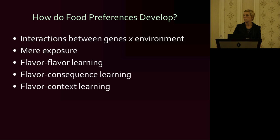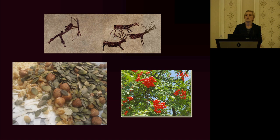Finally, flavor-context learning — there are many contexts in which food preferences are learned in today's current environment. Here we talk about the role of the family, the role of schools, and the role of peers to really influence the context in which children are learning about foods in our environment.